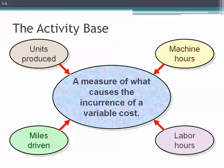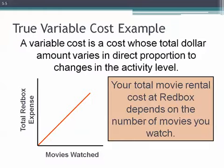Is it the number of units that we sell? Is it the number of hours that we run our machines? Is it the number of labor hours worked? Is it the miles driven, if we're talking about a car? So when we're talking about variable cost, it's important to also identify what activity base we are talking about. For example, if we're talking about the cost of movie rentals at Redbox, our total movie rental cost depends upon the number of movies we watch and the number of days we have them outstanding, so our total Redbox expense will increase as the number of DVDs we rent increases.